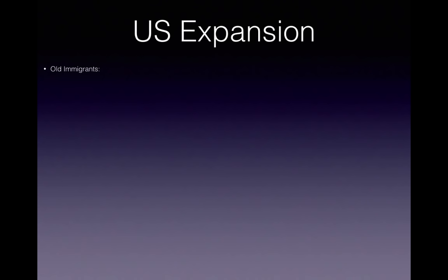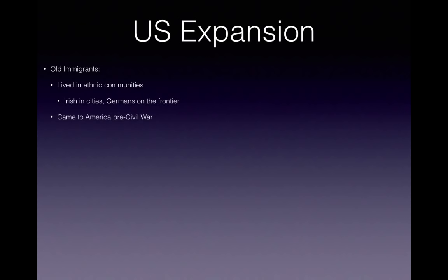We're going to shift our focus to old immigrants during this time period, which tended to live in ethnic communities. Germans and Irish make up the bulk of old immigrants. The Irish tend to settle in cities, and the Germans tend to settle on the frontier as farmers. They came to America pre-Civil War — that's what separates them from the new immigrants who will be post-Civil War. They face nativism, which is fear, discrimination, and hatred of foreigners, especially the Irish because they were Catholic. This nativist movement was anti-Catholic and sought to limit the power and influence of these immigrants. Think of the Know-Nothing Party, which was established to keep Catholics from holding office.